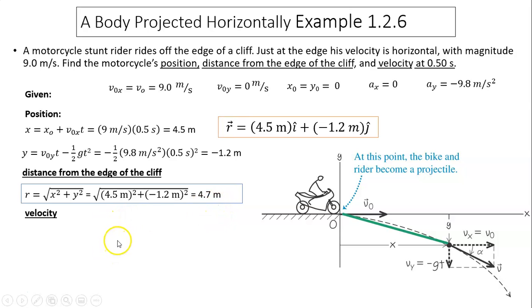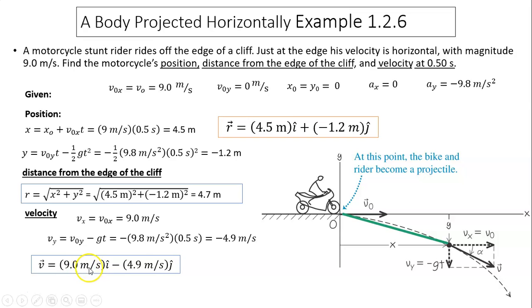Velocity, we use an equation of velocity. As you can see, horizontal does not change. Y changes using that equation. And the vector form of that is v equals 9i minus 4.9j.